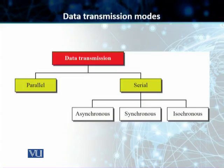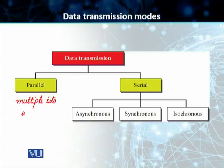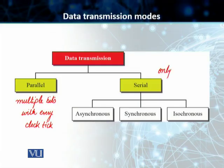The three types of serial transmission are asynchronous, synchronous, and isochronous. The basic difference between parallel and serial is that in the case of parallel, as the name indicates, we send multiple bits with every clock tick, whereas in the case of serial, we send only one bit with every clock tick.